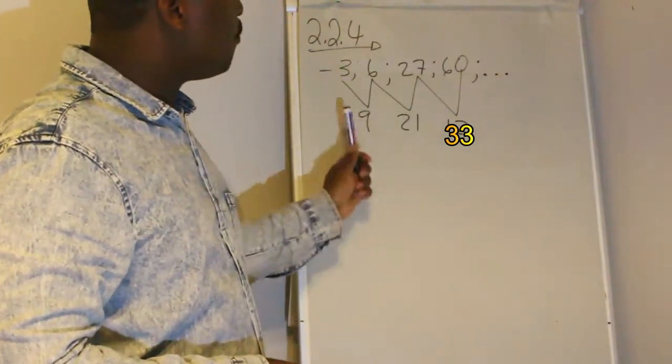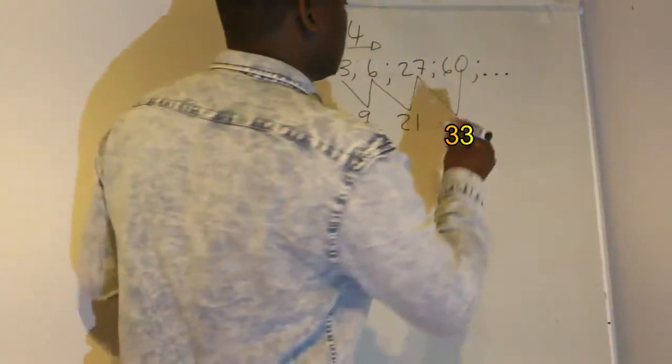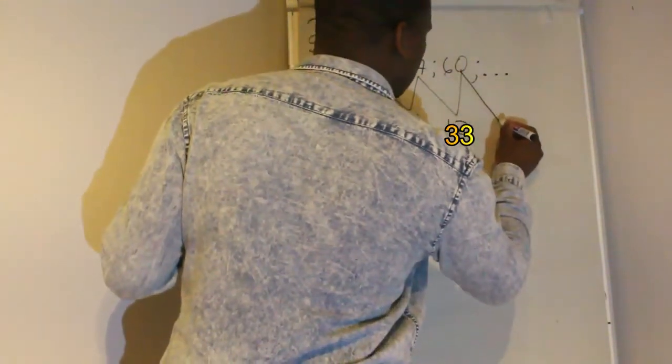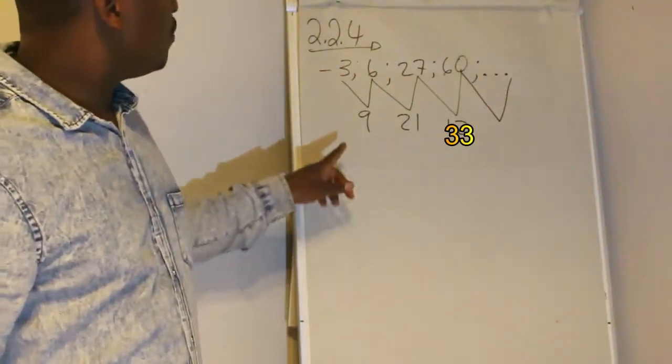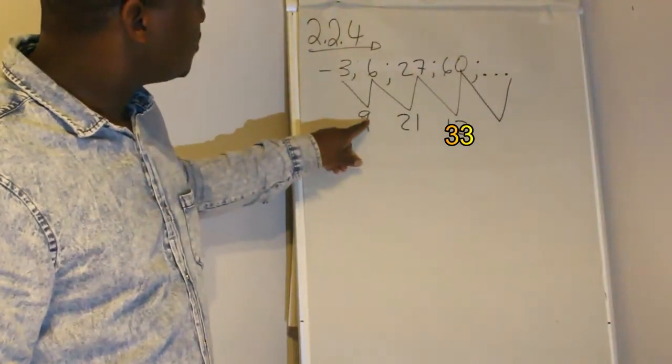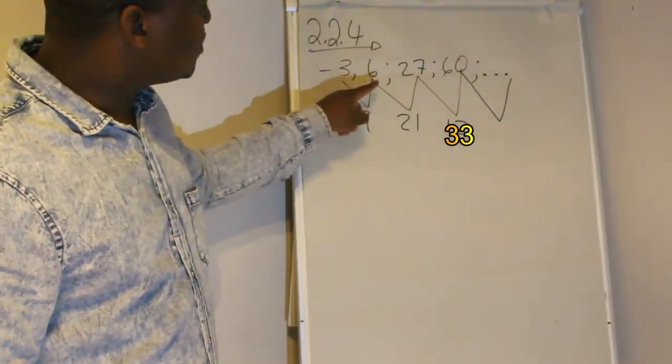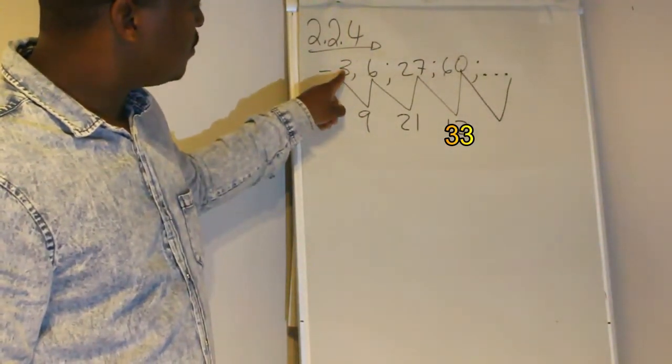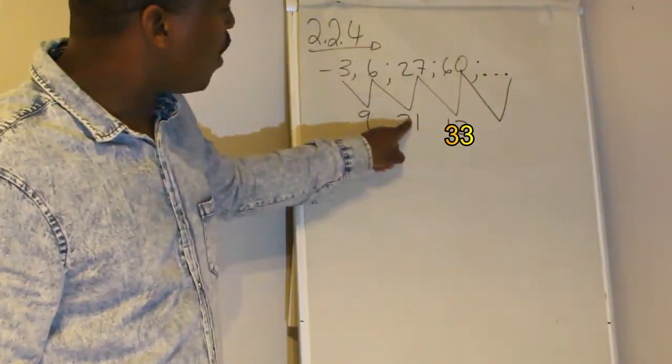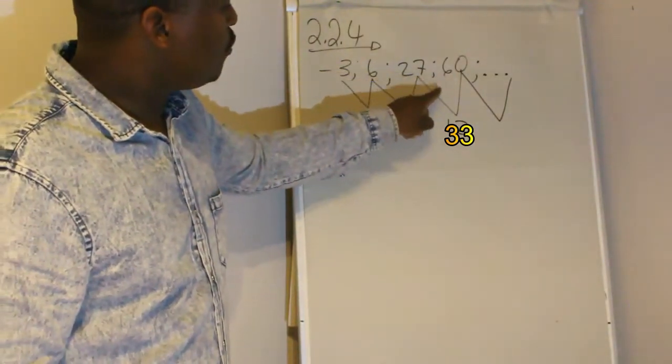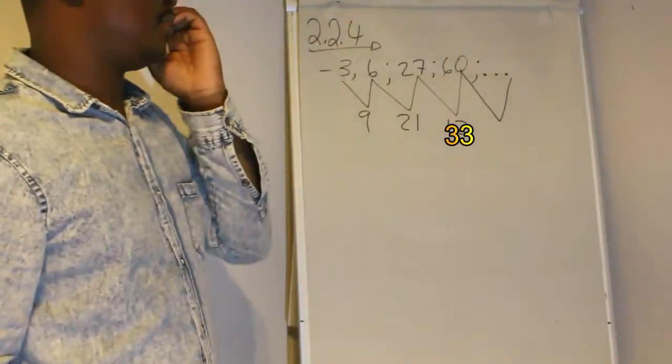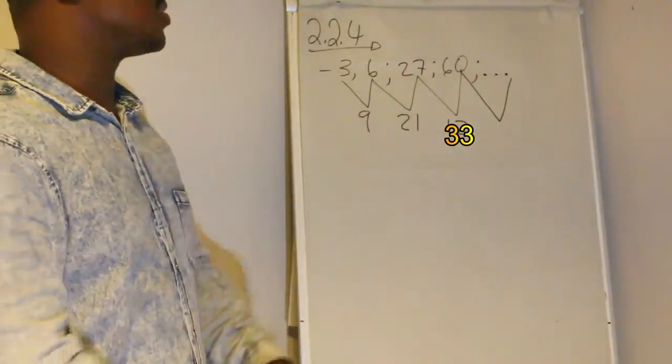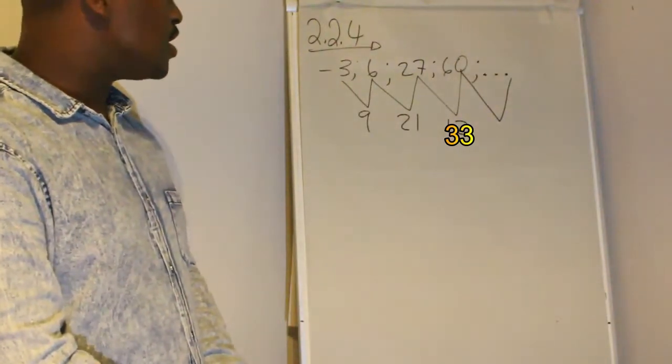To get each term, you must add the difference. So to get the 6, you add 9, then you get the 6, then add 21, you get that one. You add 12, you get 60. You add the next term, then you get the next term. The list goes on, it continues that way.